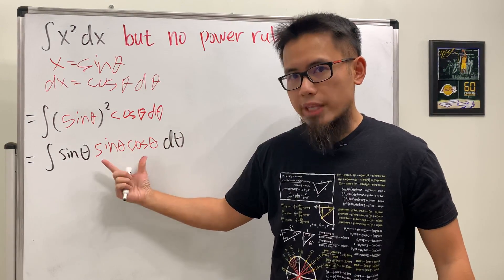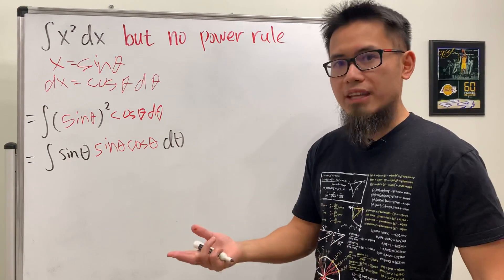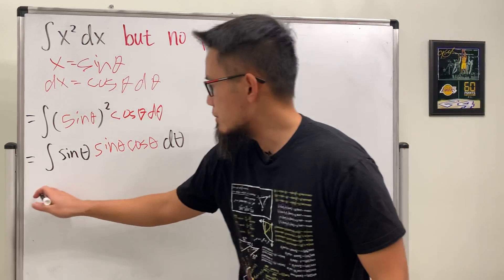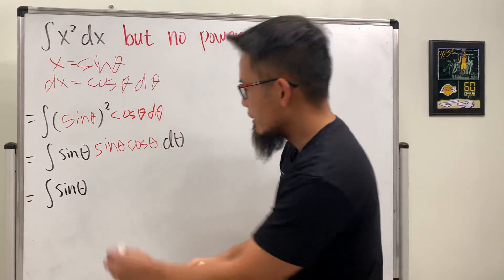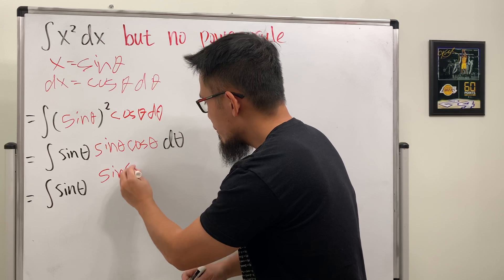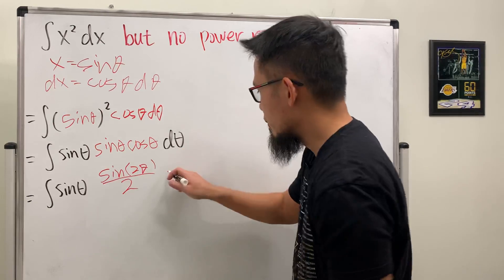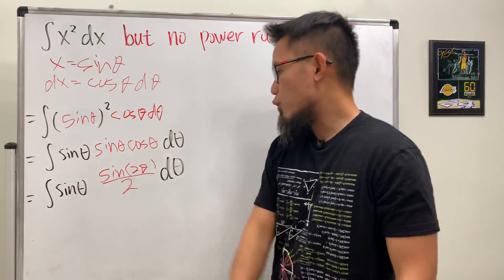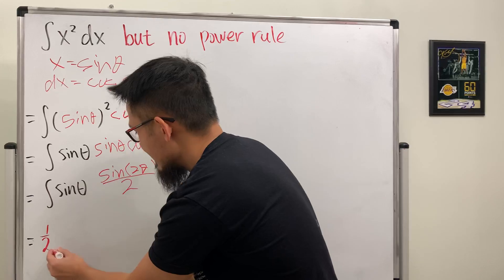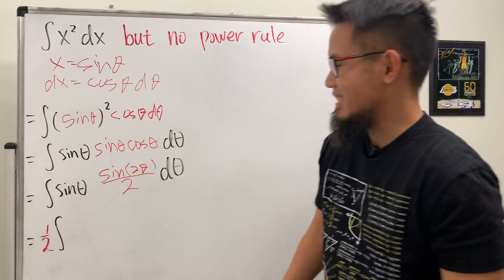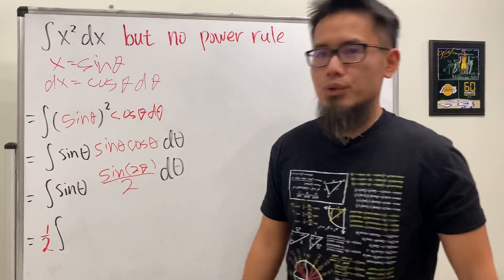And the good thing about this is that d theta can be in black right now. The good thing right here is that this right here, we actually have a nice identity for it. It's the sine of 2 theta, but divided by 2. So in fact I'm just going to replace this with the following. The first sine theta stays the same, but this right here, it's the same as saying sine of 2 theta, but then we will have to divide it by 2. And then of course we have the d theta. Now we can bring the 1 half to the front. So we have the 1 half. And this is how I used to entertain myself when I was starting teaching back in 2011.